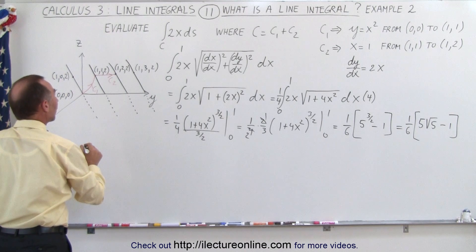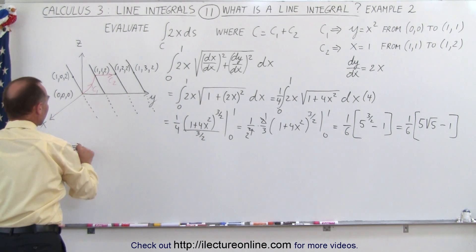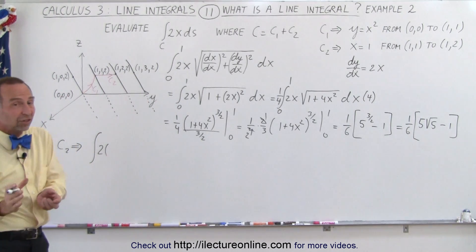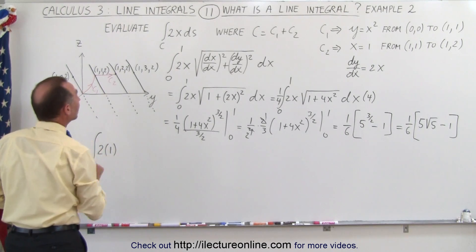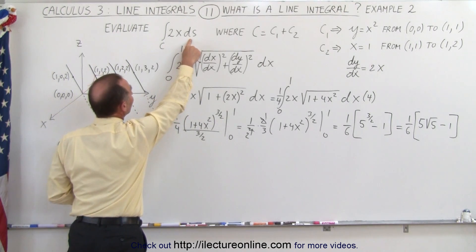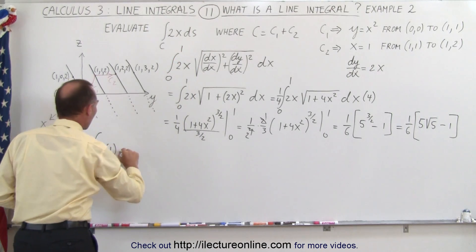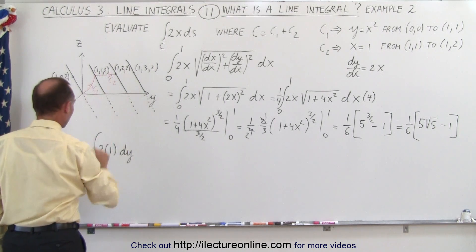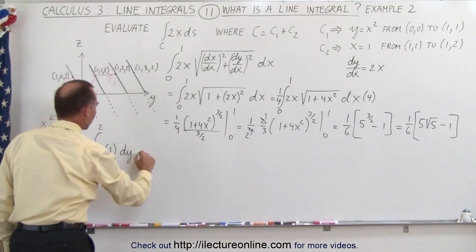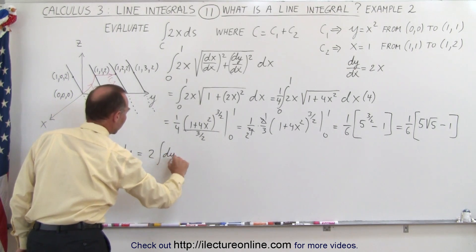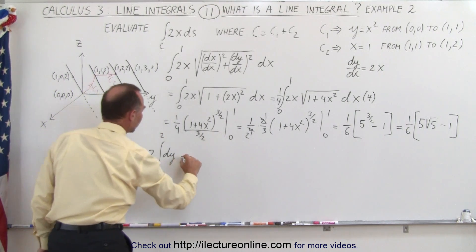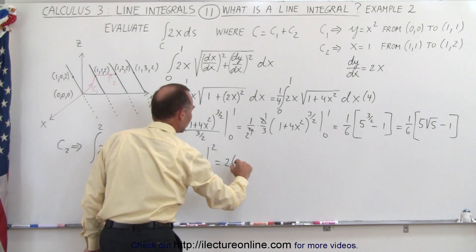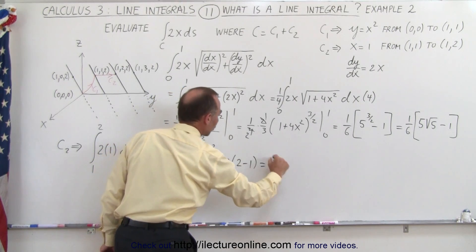So our equation will now become as follows, or the integral, so for C₂, the integral that we have up there now becomes the integral of 2 times x, but since x doesn't change, x is equal to 1, we can just plug a 1 in there, and ds, since there's no dx, ds then simply becomes dy. And dy is going to change from y equals 1 to y equals 2, so there are the limits of integration, which is equal to 2 times the integral of dy from 1 to 2, which is equal to 2 times y evaluated from 1 to 2, which is equal to 2 times (2 - 1), which is 2.